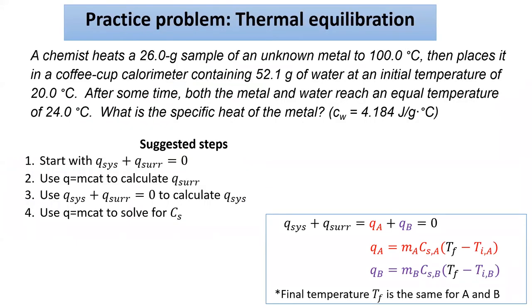So let's imagine a chemist has a piece of metal which weighs 26 grams and they heat the metal up to 100 degrees Celsius. Then they place it in 52.1 grams of water in a calorimeter at 20 degrees. When the sample reaches thermal equilibrium, the temperature of the two objects is the same, which is 24 degrees Celsius. Calculate the specific heat of the metal. Pause the video, see if you can solve it without my help.